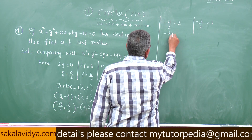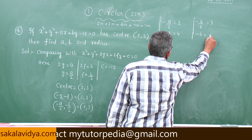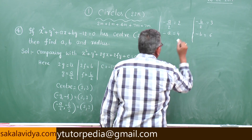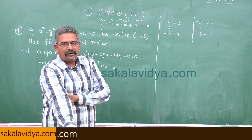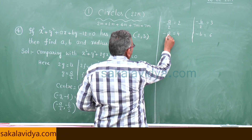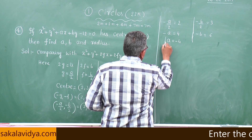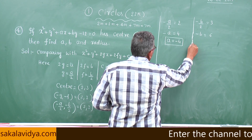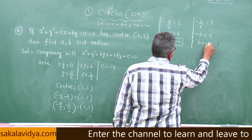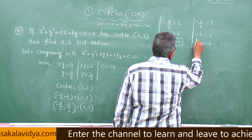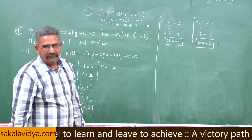So minus a equals 4, minus b equals 6. Do you expect what the values of a and b are now? Minus a equal to 4 means a equals minus 4. Minus b equal to 6 means b is equal to minus 6. Both values a and b have been evaluated.